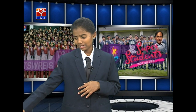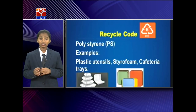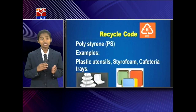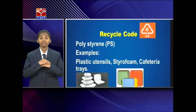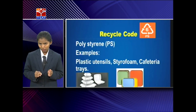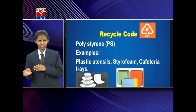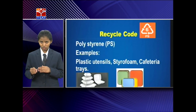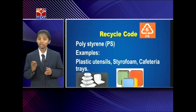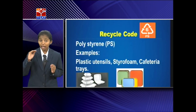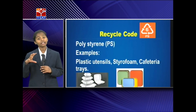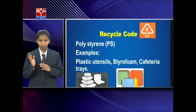Type 6 plastic is PS, which stands for polystyrene. Polystyrene is used in plastic utensils, styrofoam, and cafeteria trays. This plastic is not safe when heated, as it leaches carcinogenic chemicals into food. It is used in foam insulation, egg cartons, and styrofoam drinking cups. Styrene can contaminate food contents and is linked to an increased risk of blood cancer.